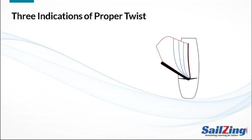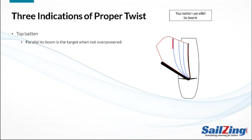How do you tell if you have the right amount of twist? Here are three indicators. First, you can compare the angle of the top batten to the boom. In most cases, you will want the top batten to be roughly parallel to the boom — this keeps the top of the sail powered up while letting air flow smoothly off the leech. If you want to point higher temporarily, the batten can be hooked in slightly, perhaps parallel to the centerline of the boat instead of to the boom. And if you are overpowered, you want the top batten to twist off.